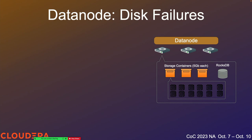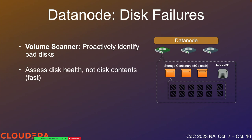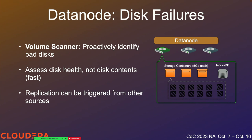Disks on data nodes can be pretty dense — 10 terabytes is standard — so we want data nodes to proactively check disks to make sure they're in good health and data is stored securely. We have a volume scanner running in the background, looking at disk health and whether disks are still up and running. The volume scanner is mostly concerned with overall disk health and is not actually walking all the data on the disk byte by byte — that's a separate scanner. This makes volume scanners relatively fast — think of it as a smoke test for the disk.